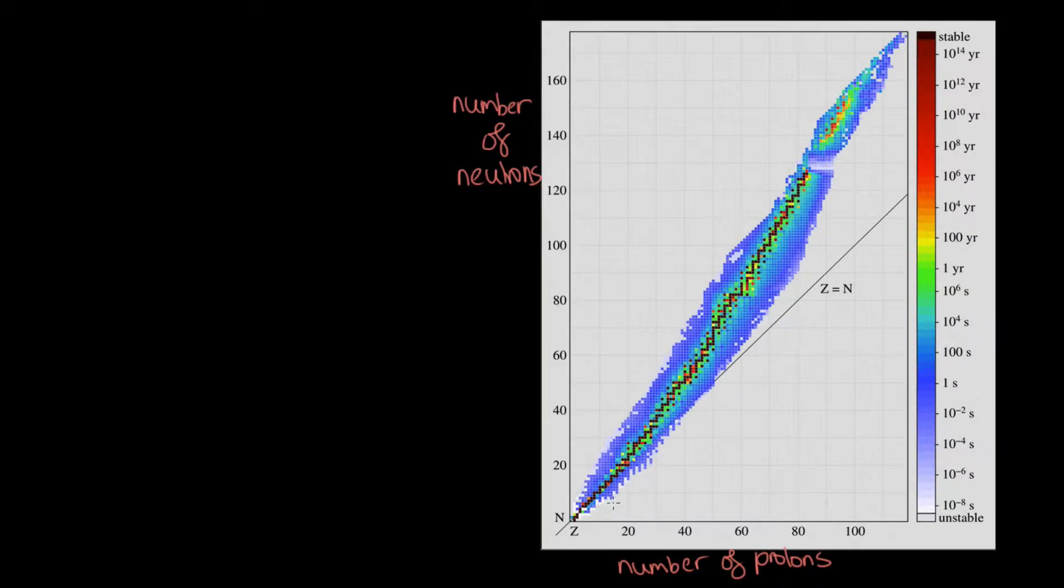You can see for low mass isotopes, such as helium, we've got two neutrons and two protons. The stable isotopes for helium lie along this line here, where z is equal to n. The number of neutrons is equal to the number of protons.